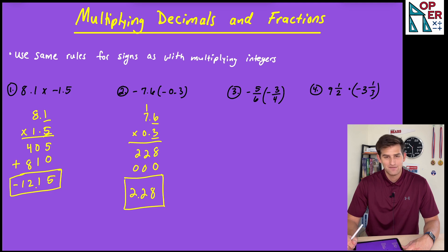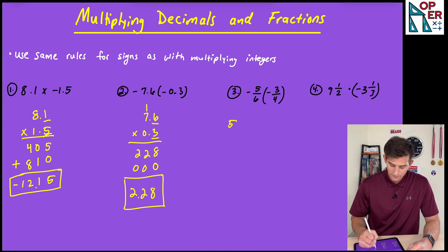All right. Number three, let's dive into some fractions now. Negative 5 sixths times negative 3 fourths. Well, we're doing a negative times a negative once again. So our answer will be positive. So 5 over 6 times 3 over 4.